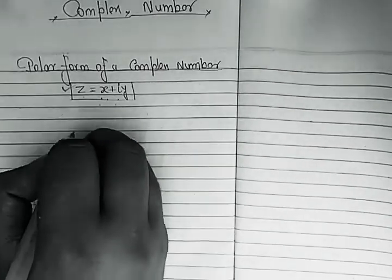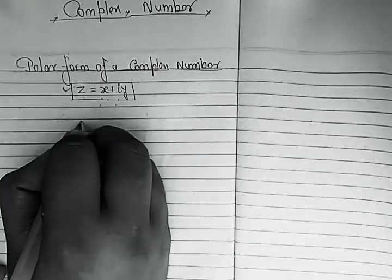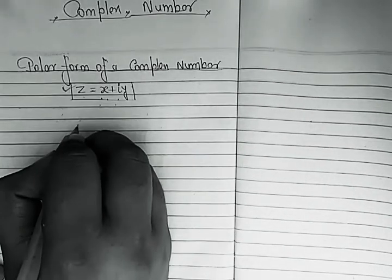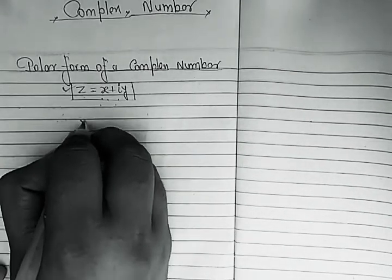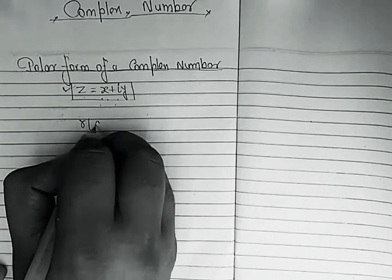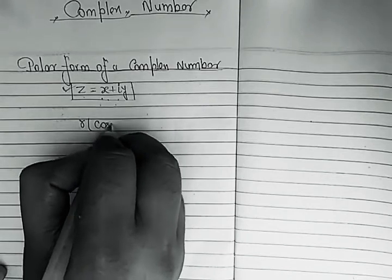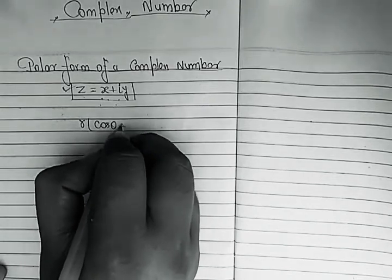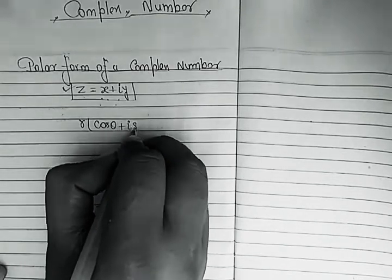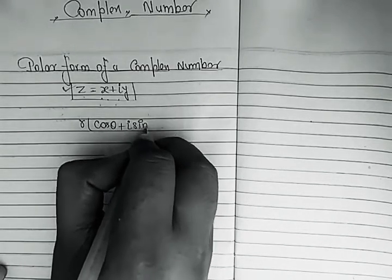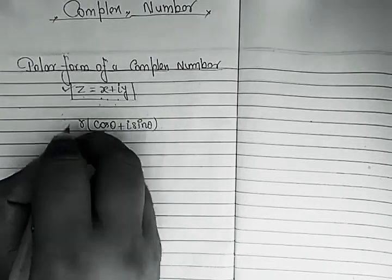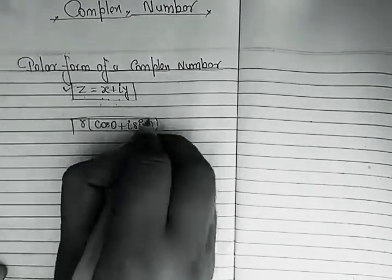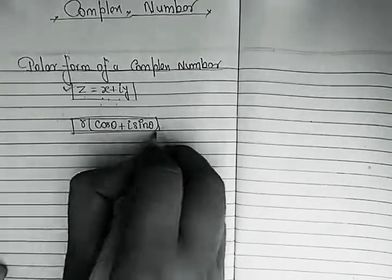What is polar form? If any complex number is written in the form of r(cos θ + i sin θ), this is called the polar form of a complex number.